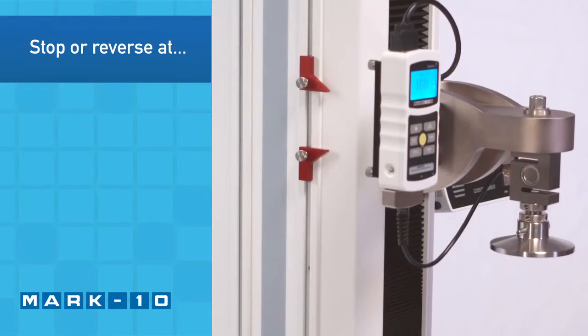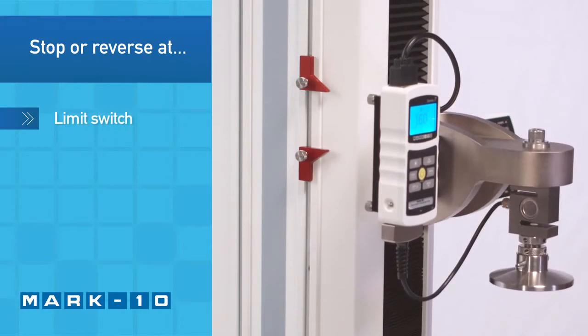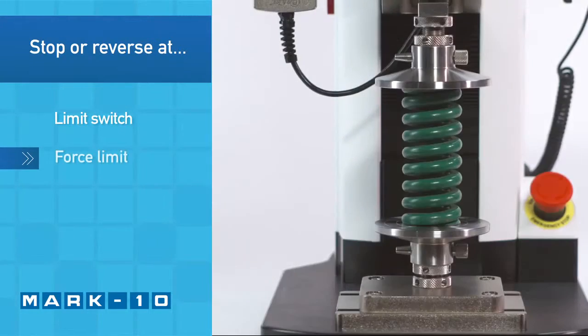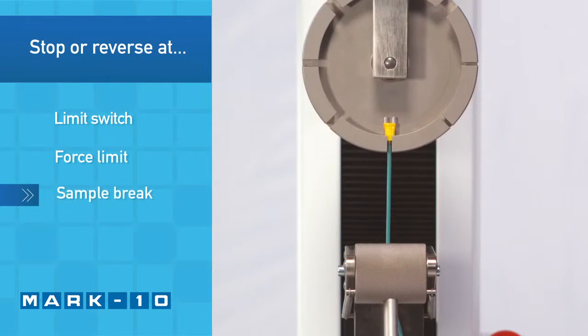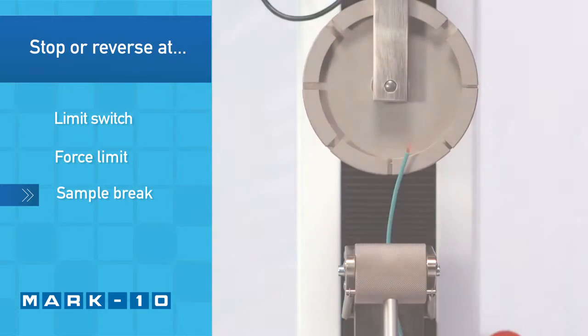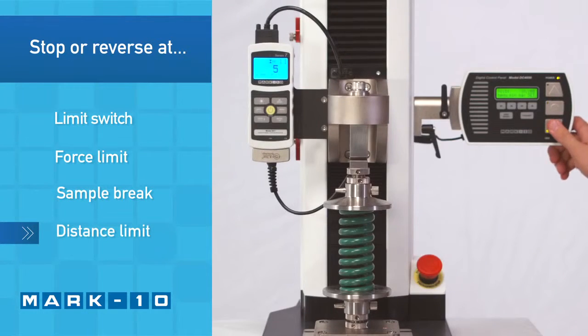The test stand can be configured to automatically reverse or cycle between limit switches, when reaching a force, when the sample has broken, or when a distance limit has been reached.